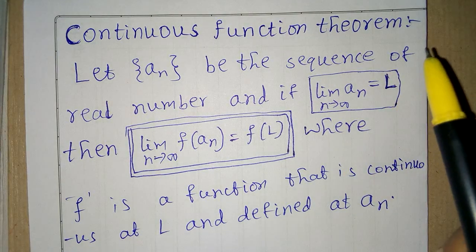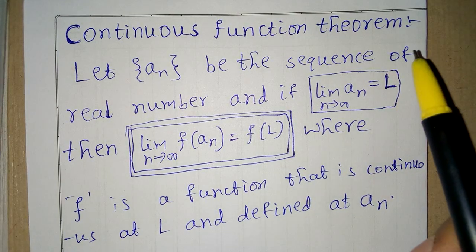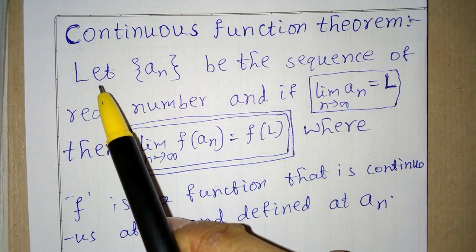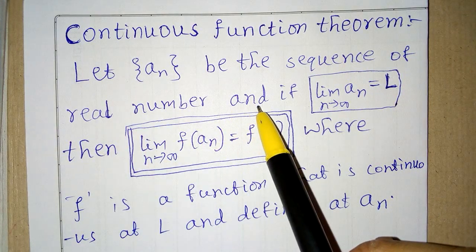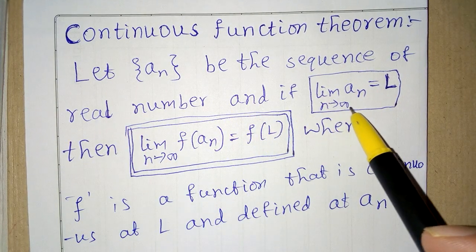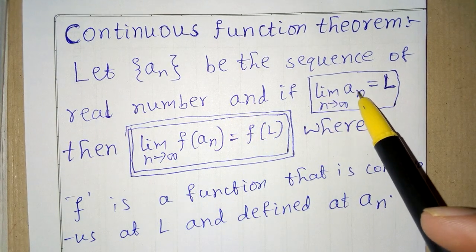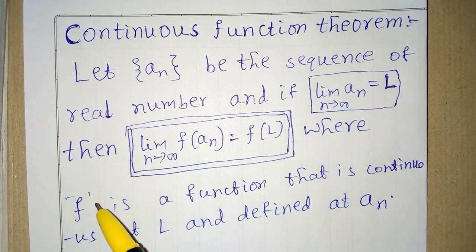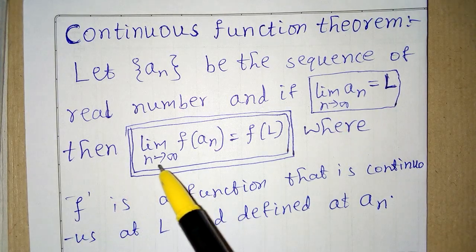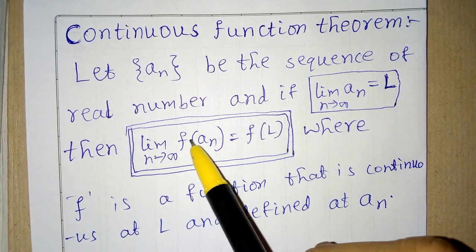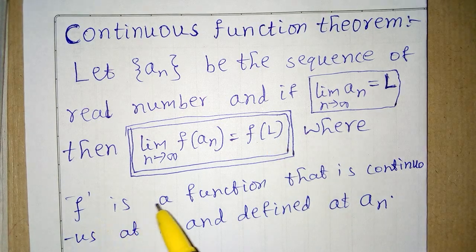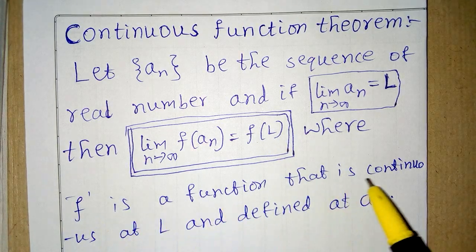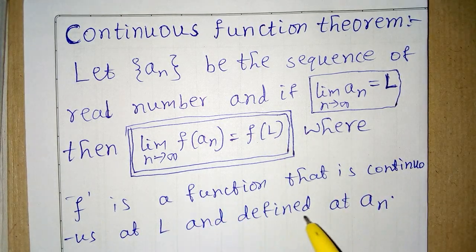Continuous Function Theorem for a Sequence: Let An be a sequence of real numbers, and if the limit as n tends to infinity of An is equal to L, then the limit as n tends to infinity of f(An) is equal to f(L), where f is a function that is continuous at L and defined on An.